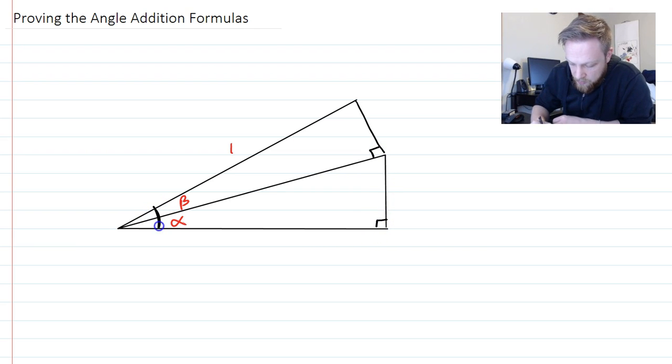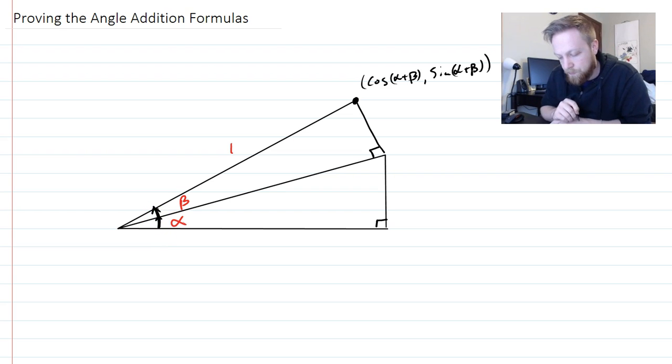Now what we're going to do is we're going to start filling in some of the things we know just based off of this first right triangle. Now the idea here is that these two angles together, this right here is going to be the point cosine of alpha plus beta, sine of alpha plus beta, because you can picture this point here kind of being rotated along the unit circle. So we rotate alpha, then we rotate beta some more, and so let's just focus on this beta triangle up here.